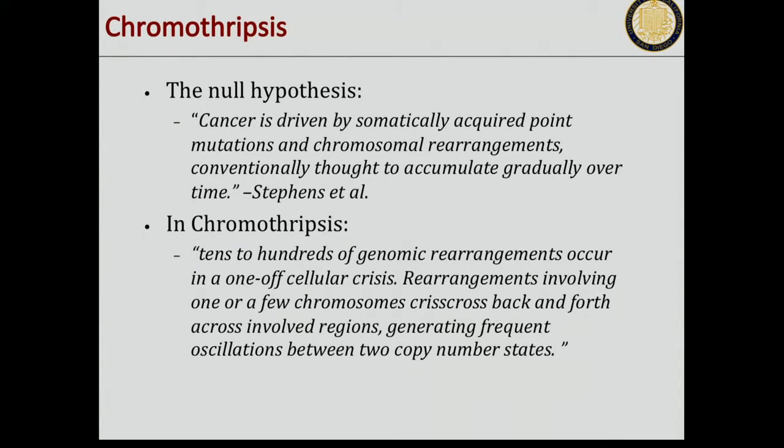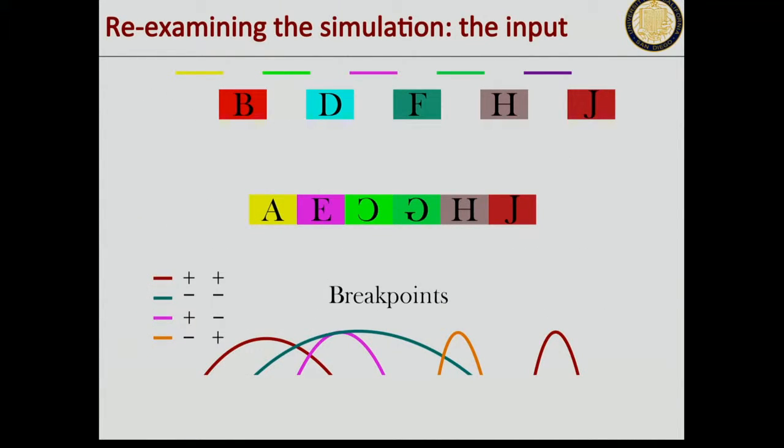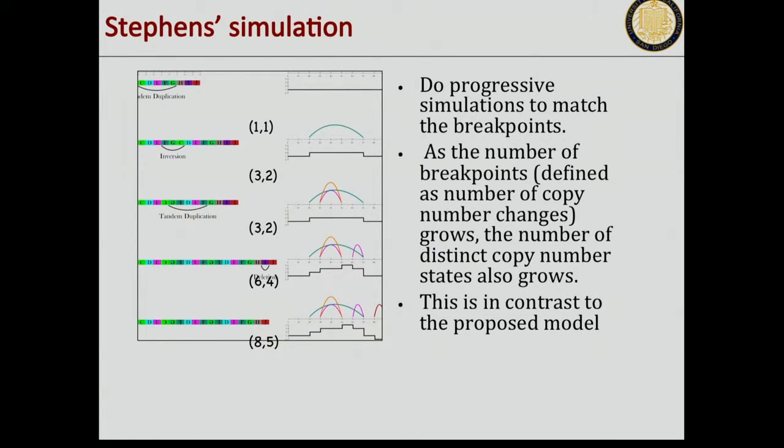When Stephens proposed this, they came up with a nice Monte Carlo-based simulation idea, and it's worth looking into what they tried. Here you have some rearrangements. There's this notation about how to display breakpoints of different types. As you accumulate rearrangements, your genome gets more and more rearranged. What they showed in their simulation is, if you start from a normal genome and simulate rearrangements, here's a duplication, an inversion, another tandem duplication, and so on.